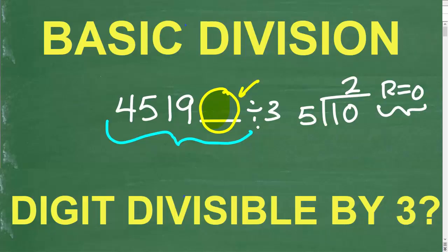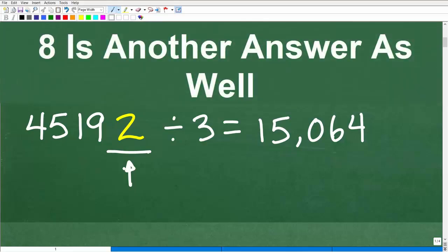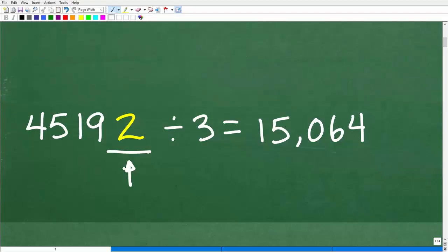So what did you come up with? Let's take a look at one possible correct answer, and that would be 2. So 45192, if you take this entire number and divide it by 3, you'll see the answer is 15064, remainder 0. This number is divisible by 3 because there is no remainder, or you have a remainder of 0. So 2 would be one correct answer.